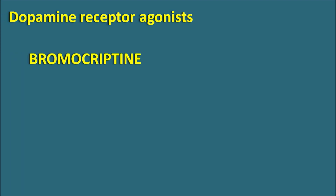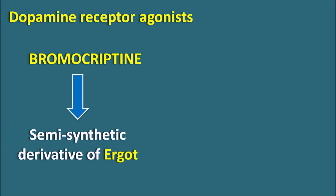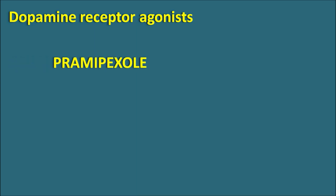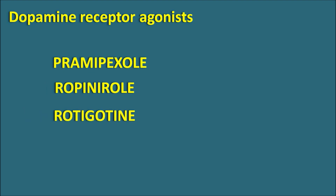Now let us look at the dopamine receptor agonists. One drug is bromocriptine, which is derived from ergot alkaloids — it is a semi-synthetic derivative of ergot. Another drug is apomorphine, which is an anhydrous product of morphine, derived from morphine by dehydration. That's why apomorphine also acts as an emetic, because opiates act as emetics by stimulating the CTZ. Other dopamine receptor agonists include pramipexole, ropinirole, and rotigotine. These are newer generation agonists with somewhat fewer side effects compared to bromocriptine and apomorphine.